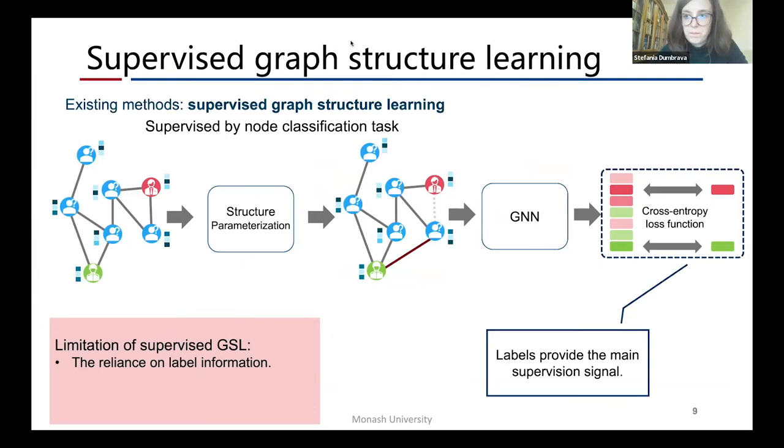However, this supervised paradigm has some limitations. The first is the reliance on label information. Learning with node classification tasks needs manual annotated labels to provide supervision signals. Unfortunately, the label information is sometimes expensive to acquire in most real-world systems.